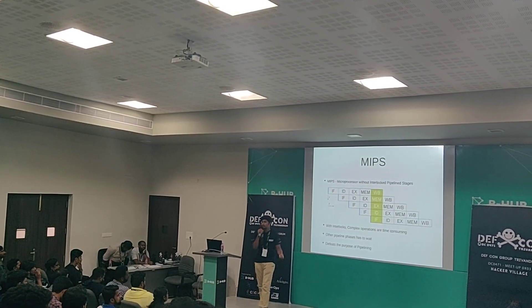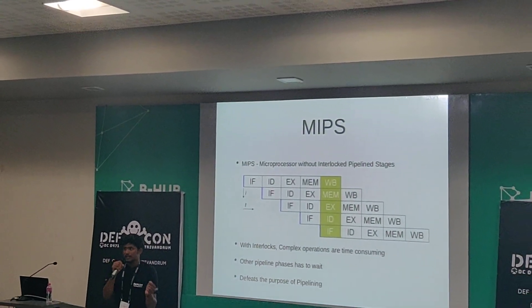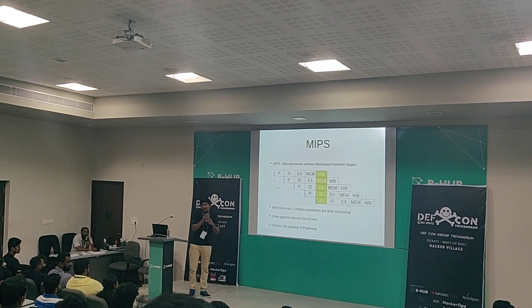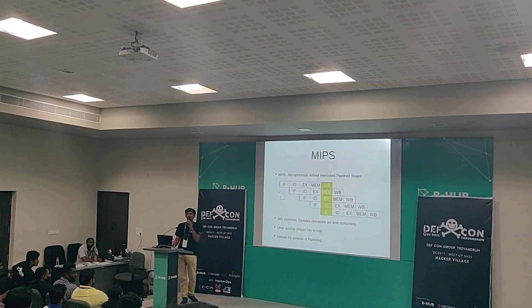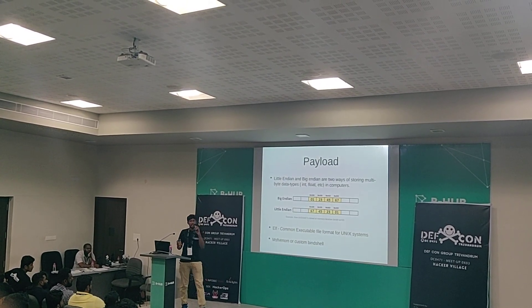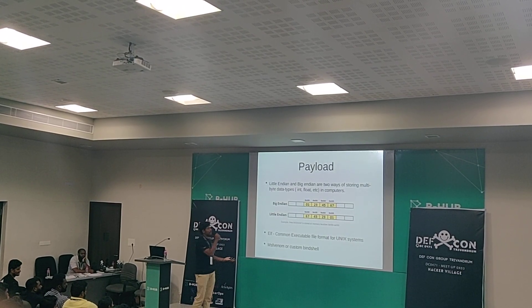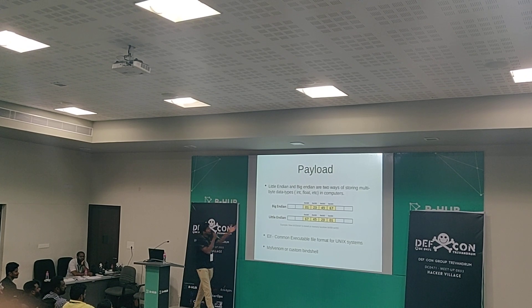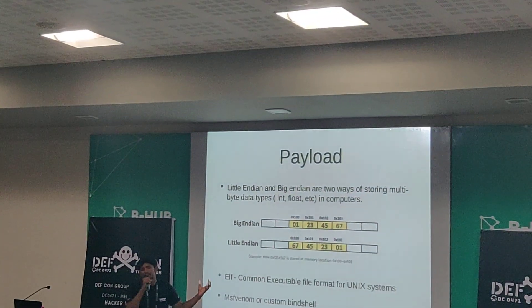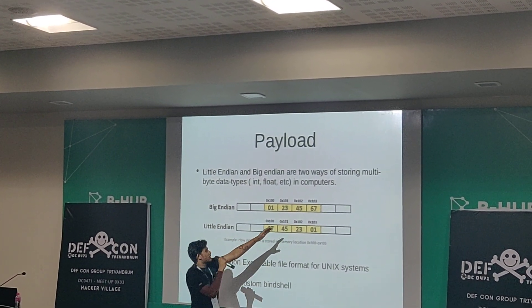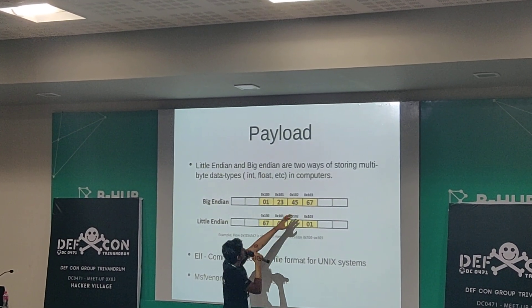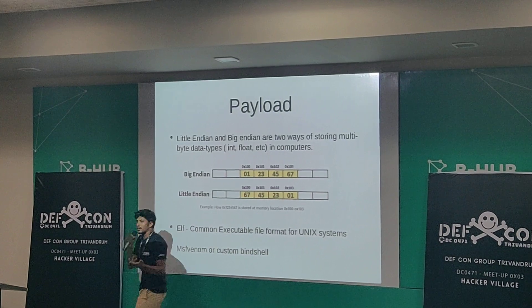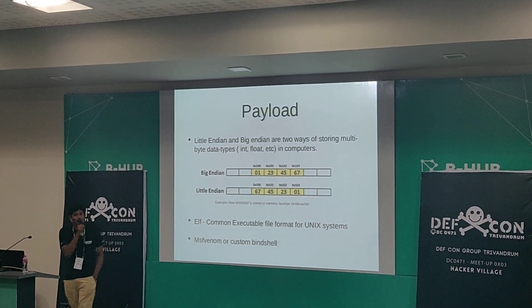With interlocks, complex operations are time-consuming and other pipeline phases have to wait. Instructions have designated clock cycles — if they don't execute within them, it defeats pipelining. That's why MIPS was developed, and most routers are based on this architecture. Coming to payload generation — we need to know about endianness. Little-endian is a way of storing multi-byte data where bytes are stored in reverse order compared to big-endian. Big-endian goes 1, 2, 3... whereas little-endian goes in reverse.